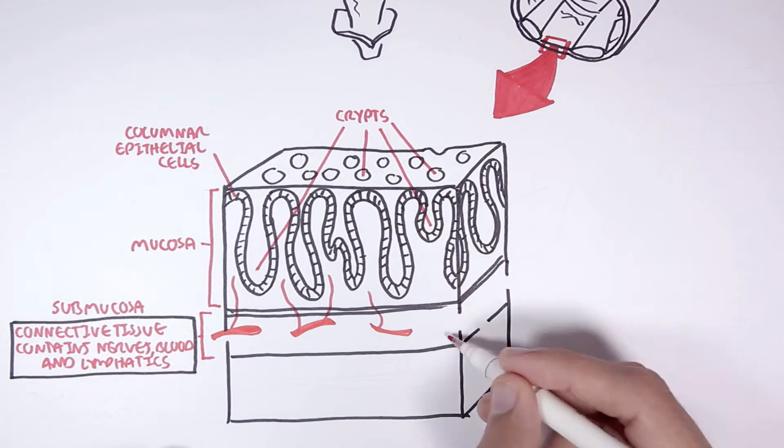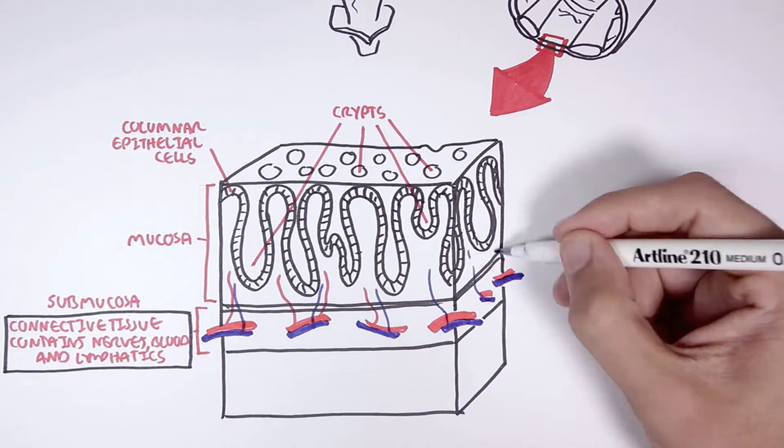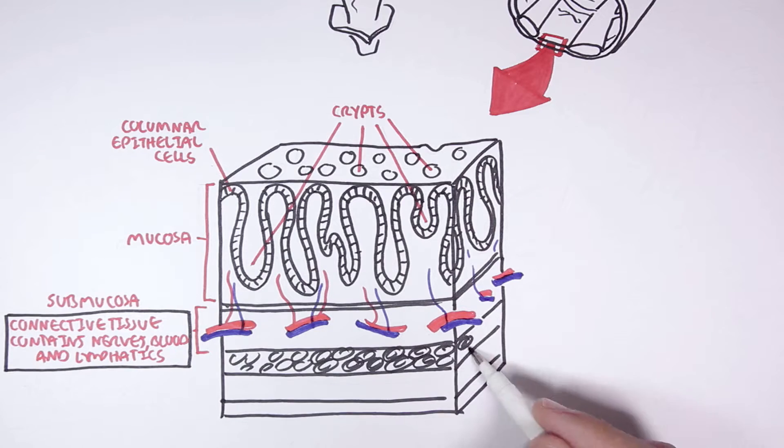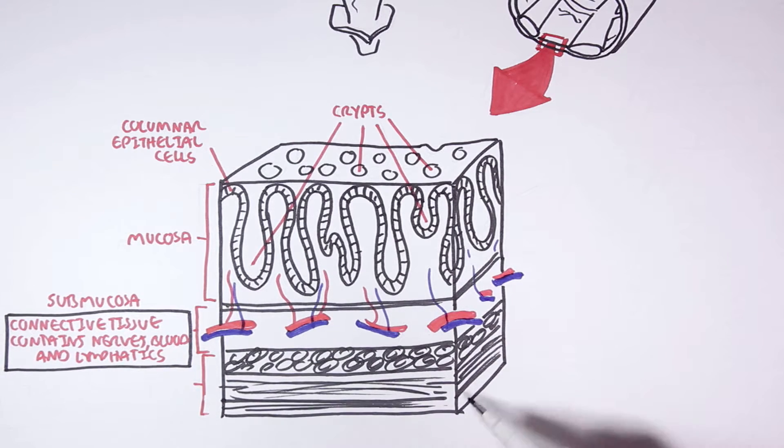Here we have the arteries that supply the cells and veins that leave the area. Then there is the muscularis, which is the muscle layer.